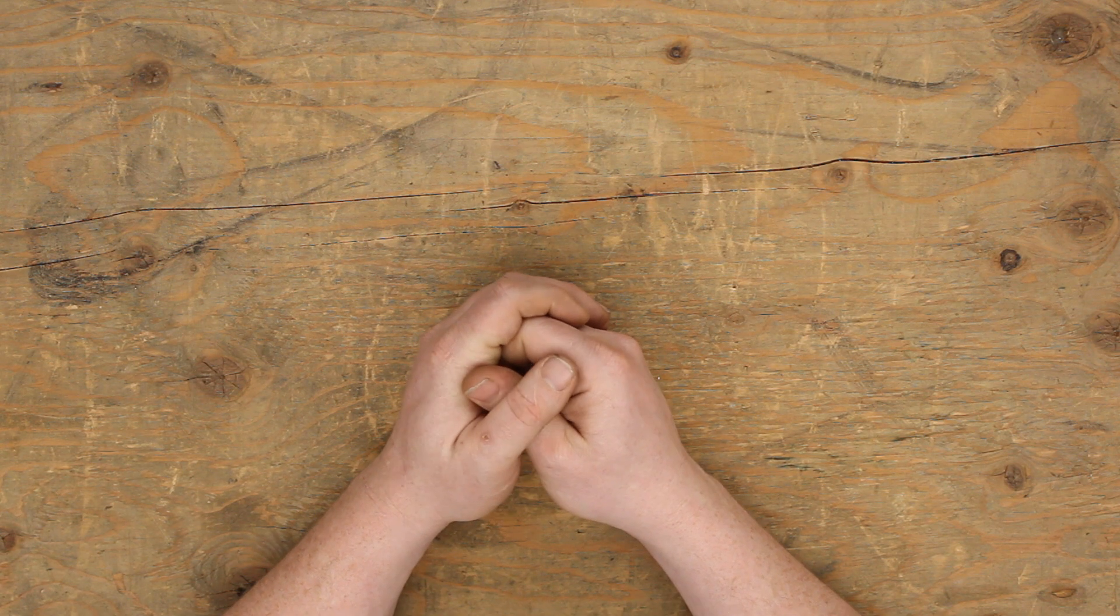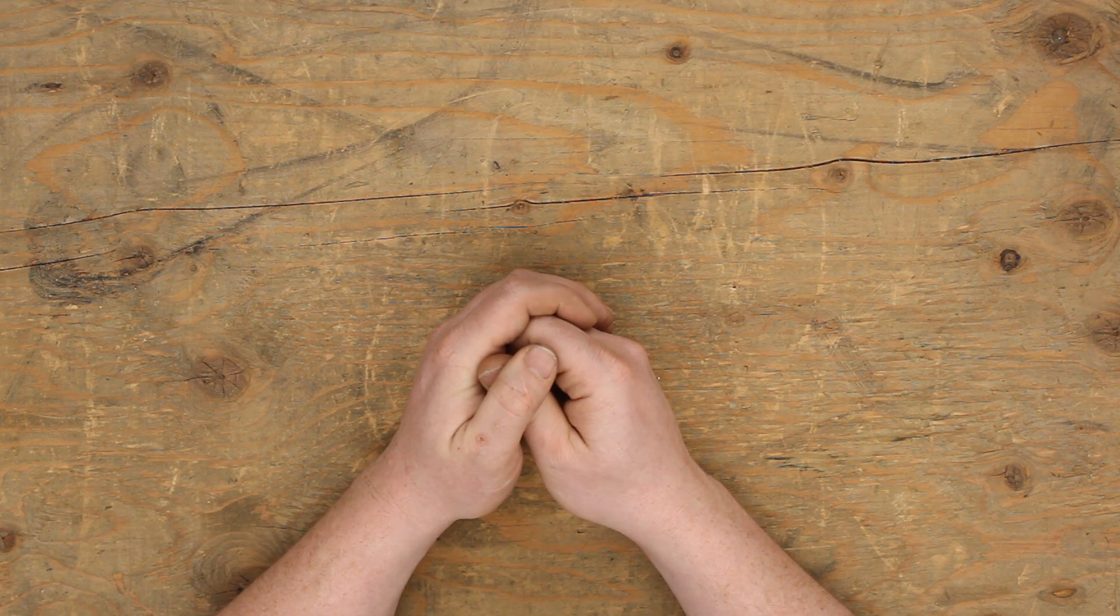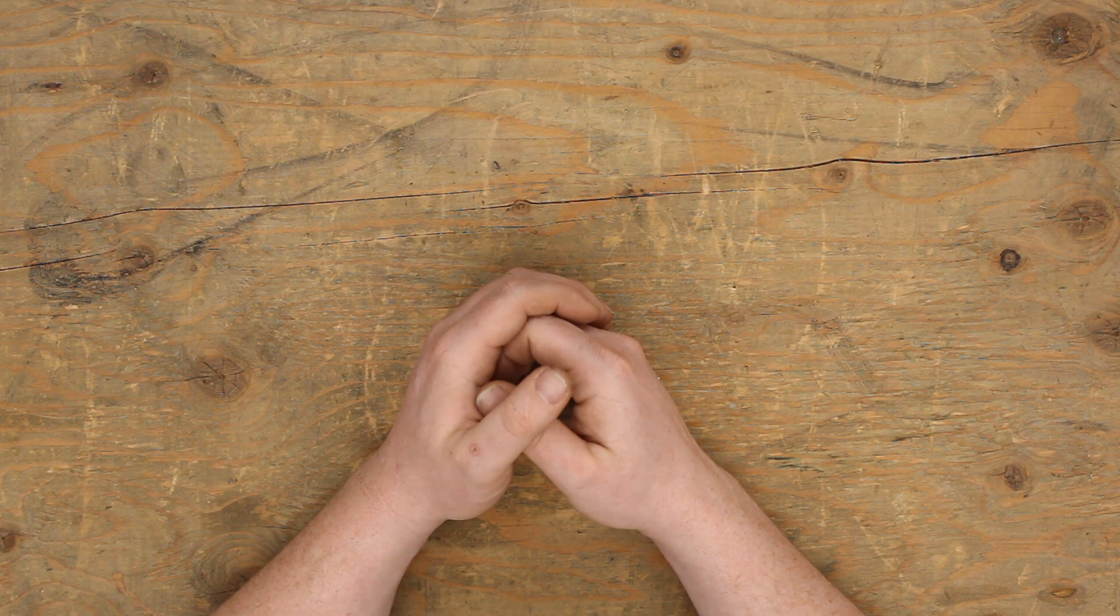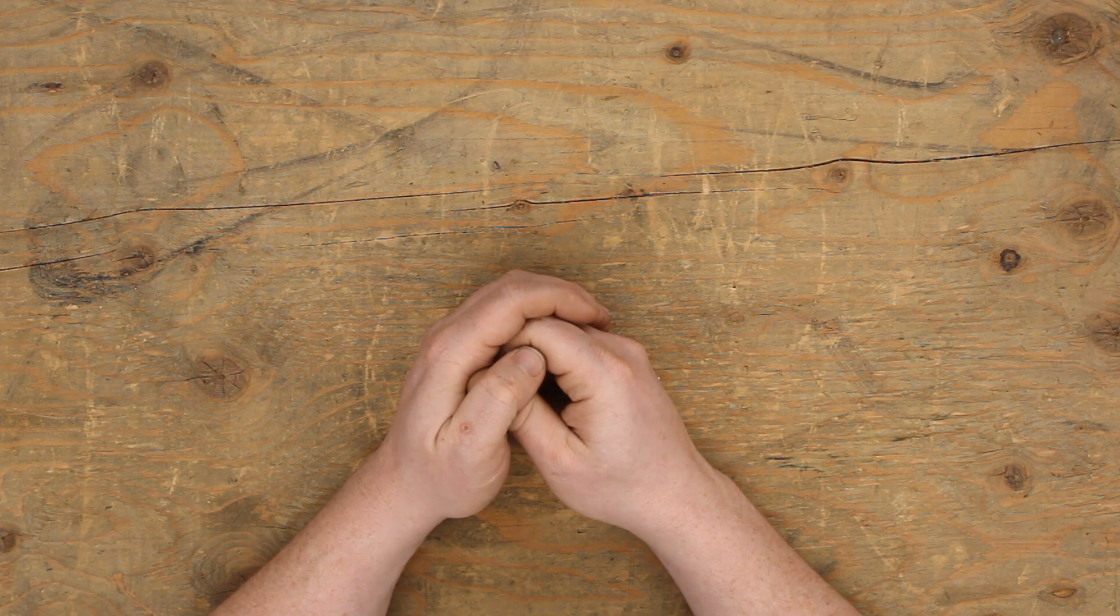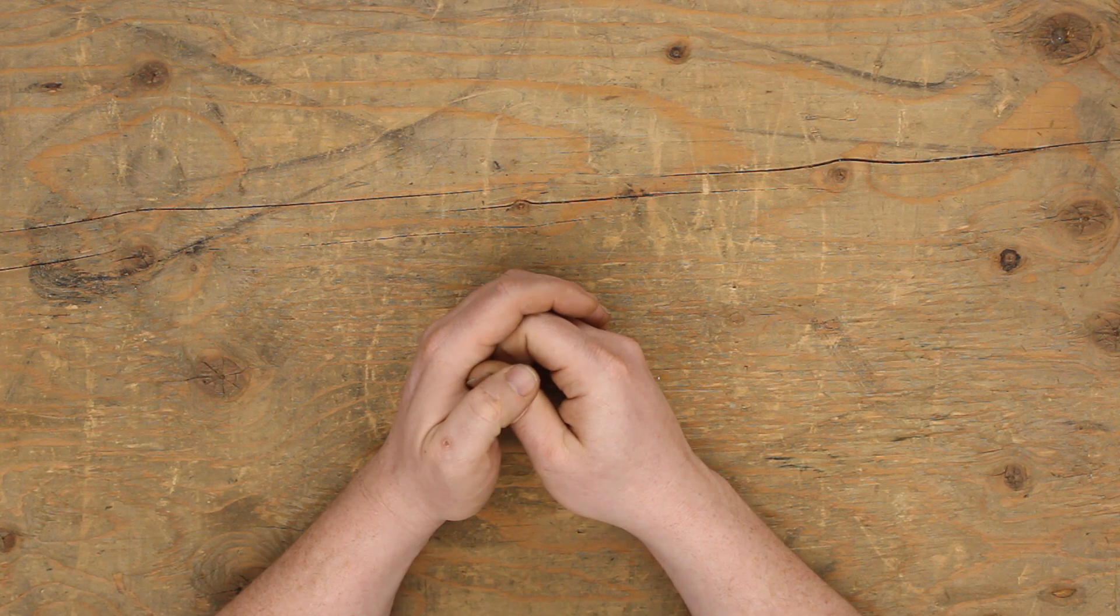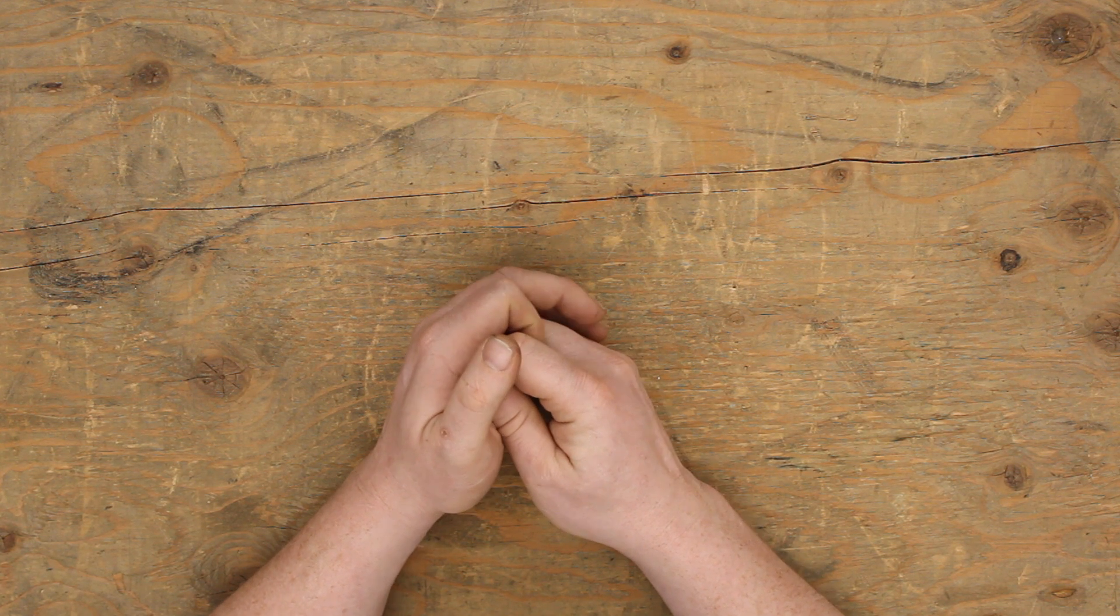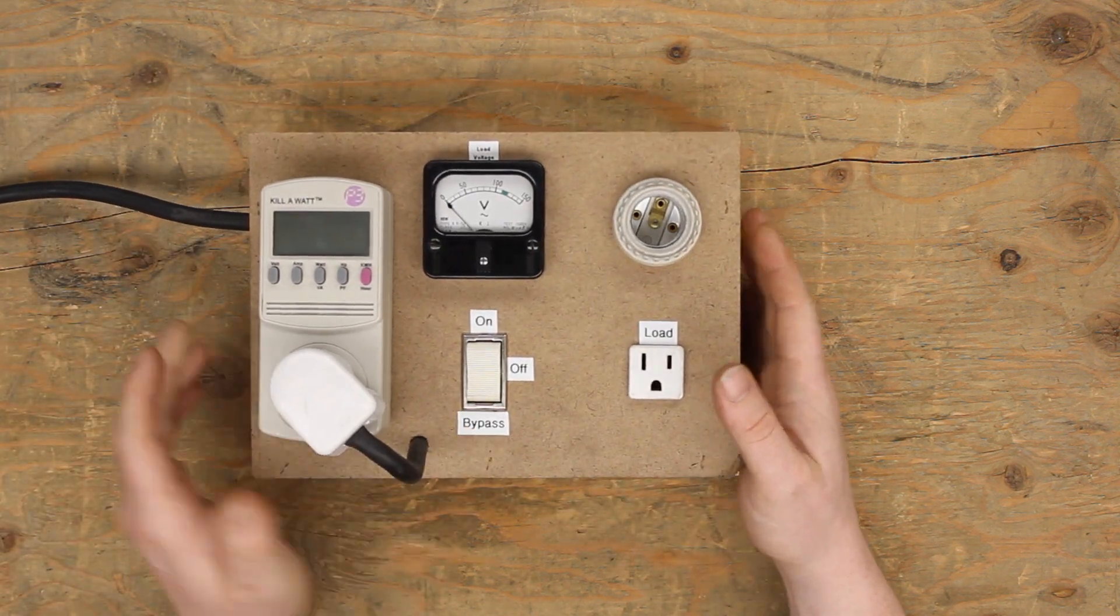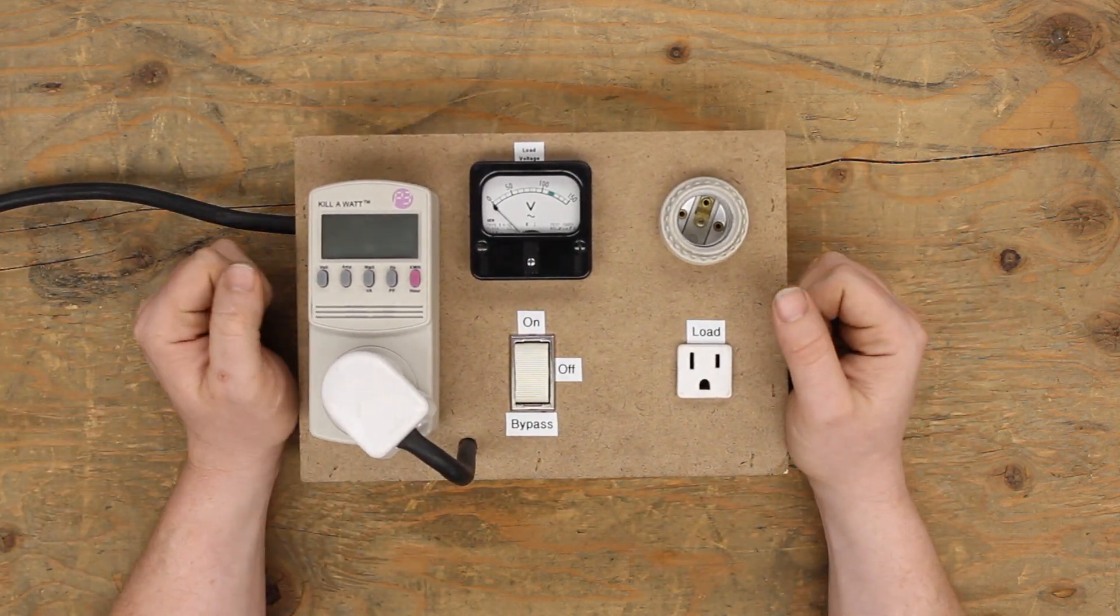Some will have variacs, some will have watt-hour meters, others will have volt meters, others will have just individual switches for a bunch of light bulbs, and some people, it's just quite simply a light switch and a bulb socket and two electrical outlets. But I'm referring to this device right here, which I built myself.